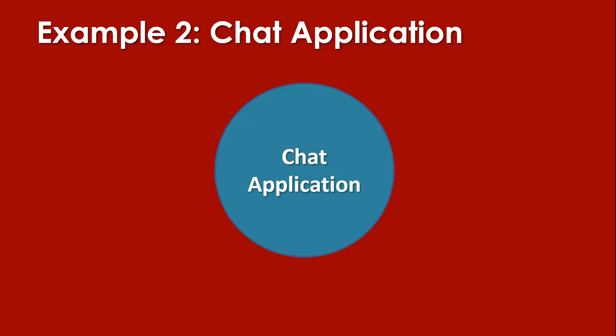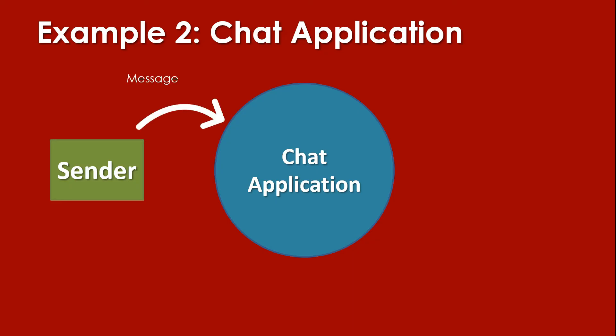Let's have another example. Let's say you want to create a chat application. When creating the context diagram for this, we have the process with the name of the application: chat application. If we are talking about chat, we have what we call the sender. The sender will provide the message, and also the receiver's name or contact details, because the application needs the receiver's information for the message to be sent.